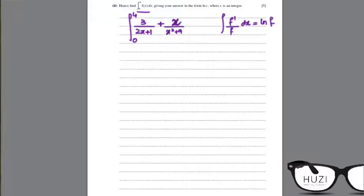So over here, we take 3 common and we multiply it by 2, so this would become 3 over 2 ln of 2x plus 1. We multiply and divide by 2, so 2x is the differential of x squared plus 9, so this would be 1 over 2 ln of x squared plus 9.